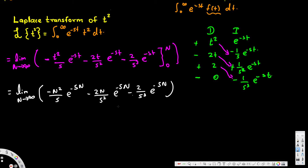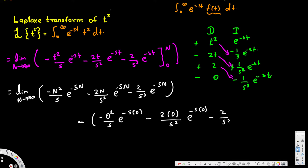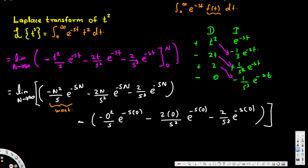Substituting 0 for t, we get: negative 0 squared over s times e to the power of negative s times 0, minus 2 times 0 over s squared times e to the negative s times 0, then minus 2 over s cubed times e to the negative s times 0. As n approaches infinity, we want all the terms from the upper limit to equal zero.